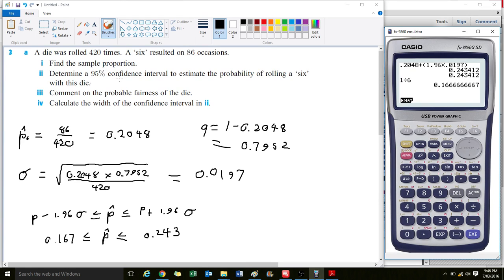To calculate the width of the confidence interval, just take the larger end minus the smaller end. That'll show you the width over which the probability lies. That's a fairly basic one.